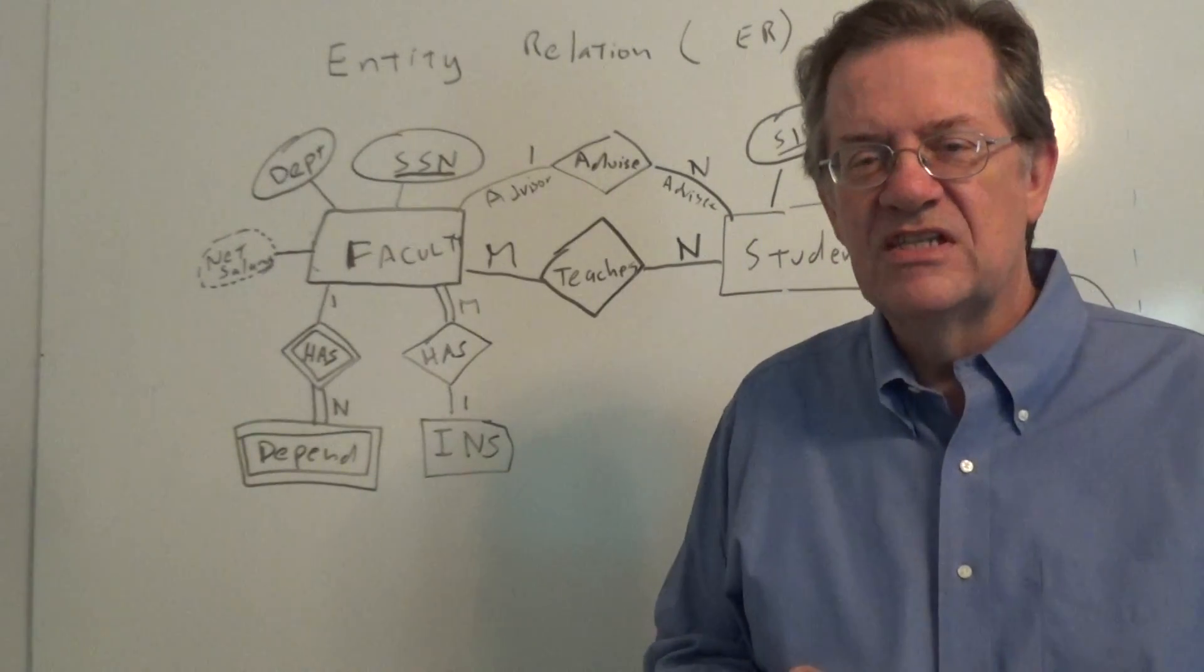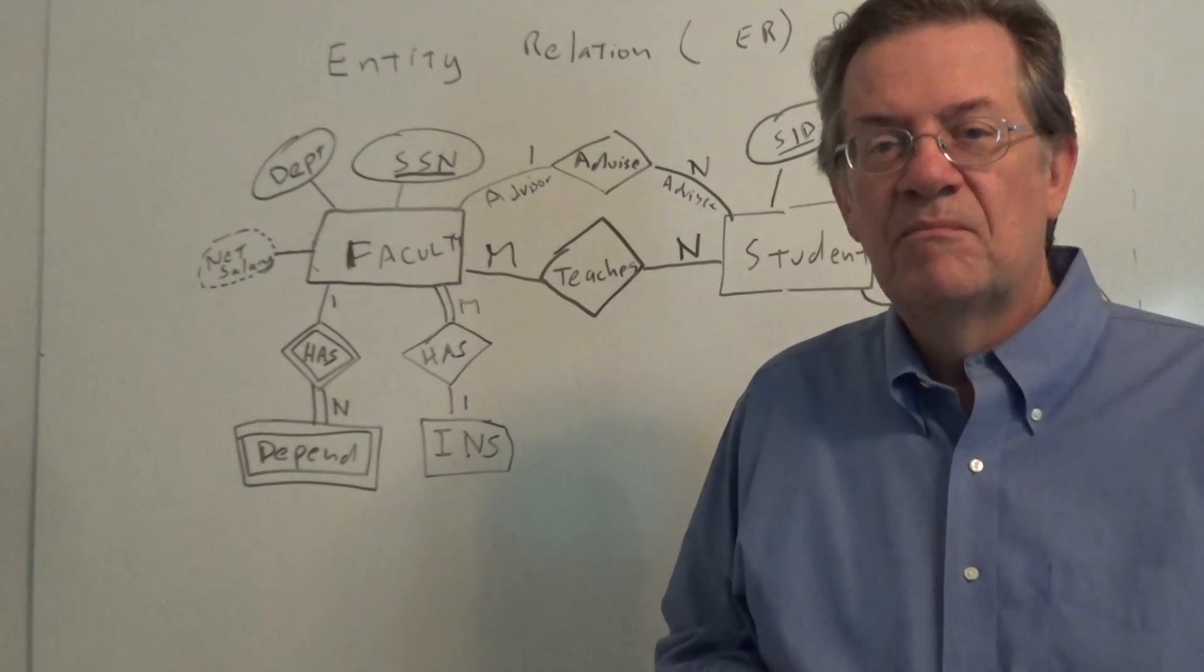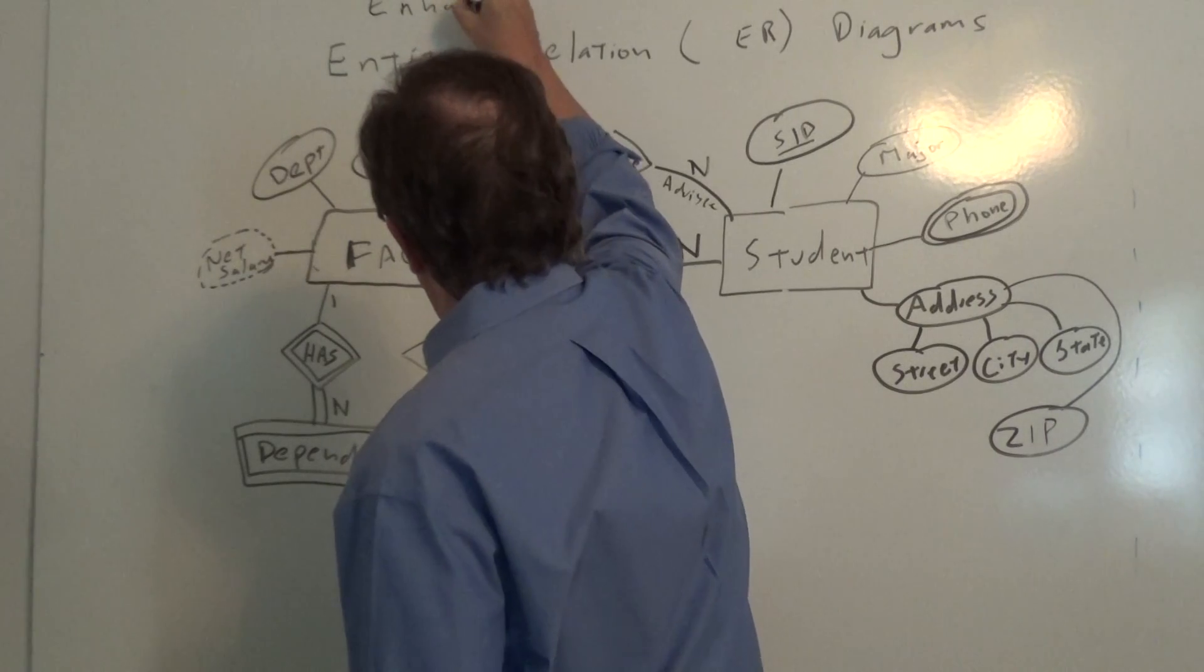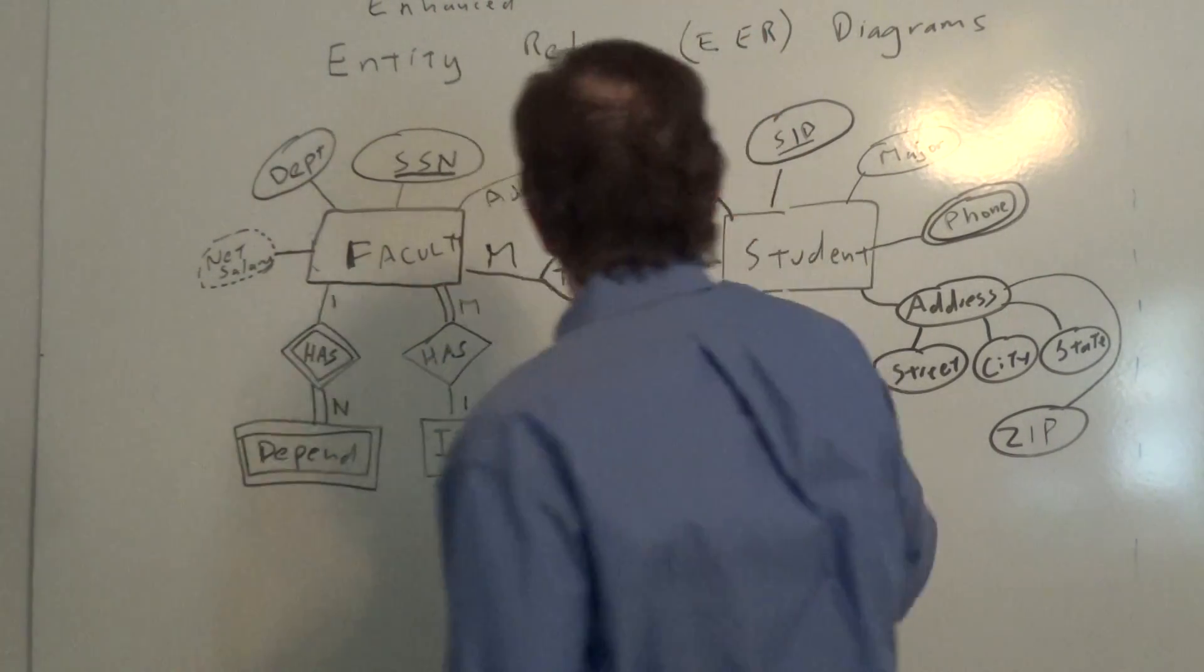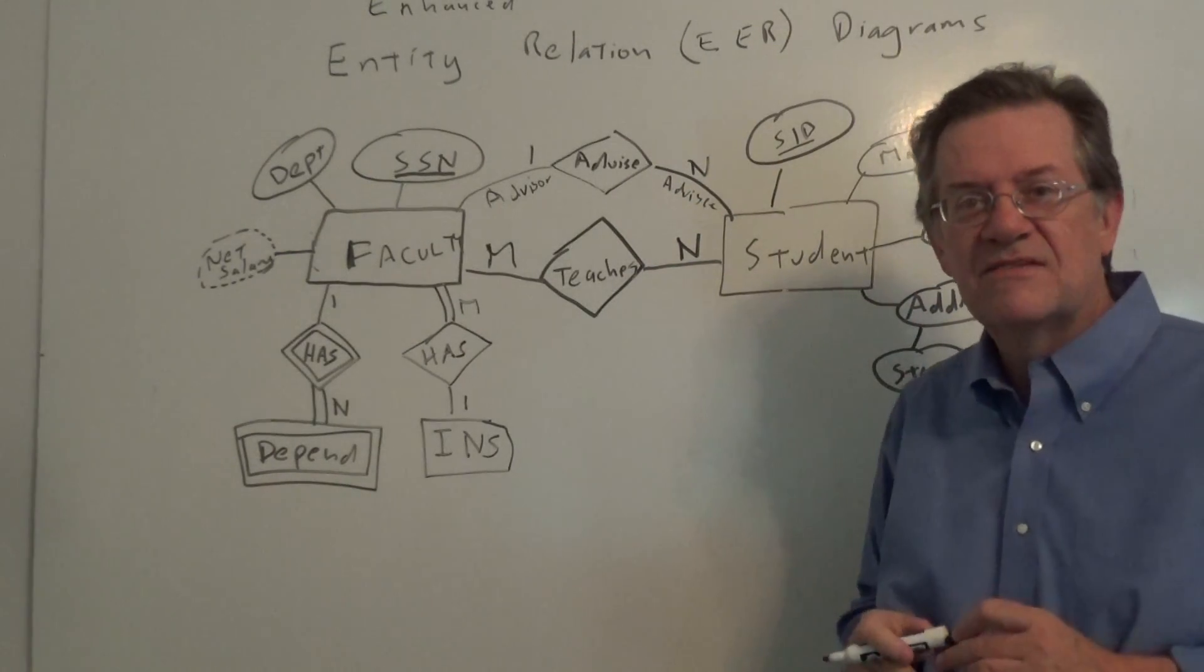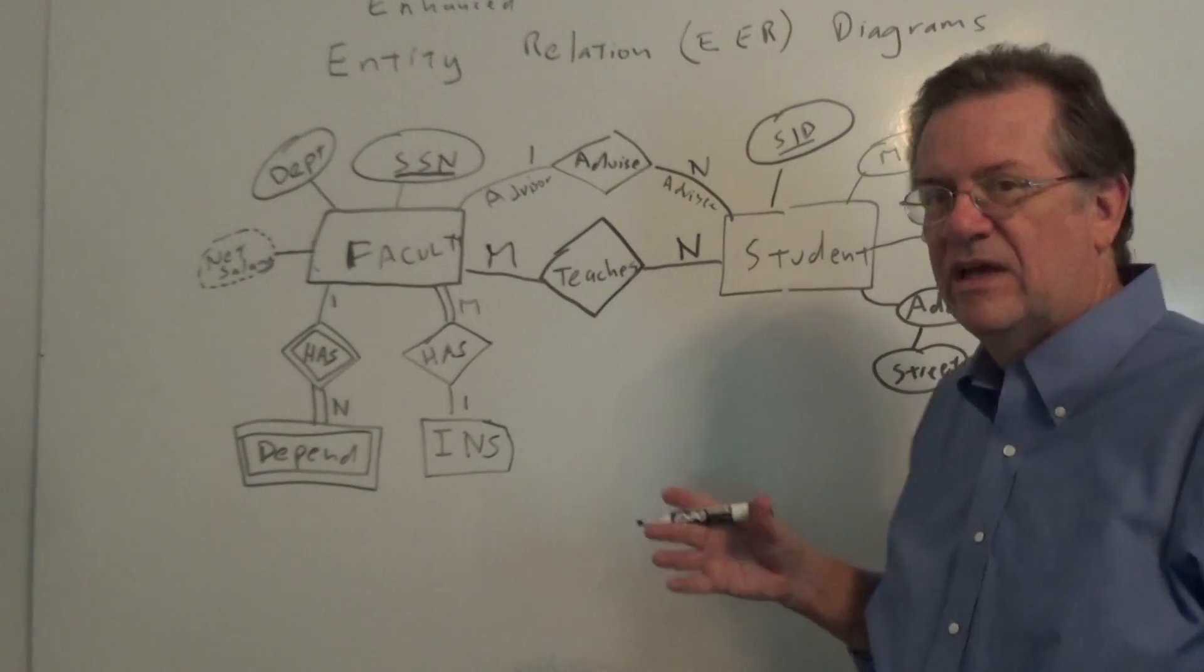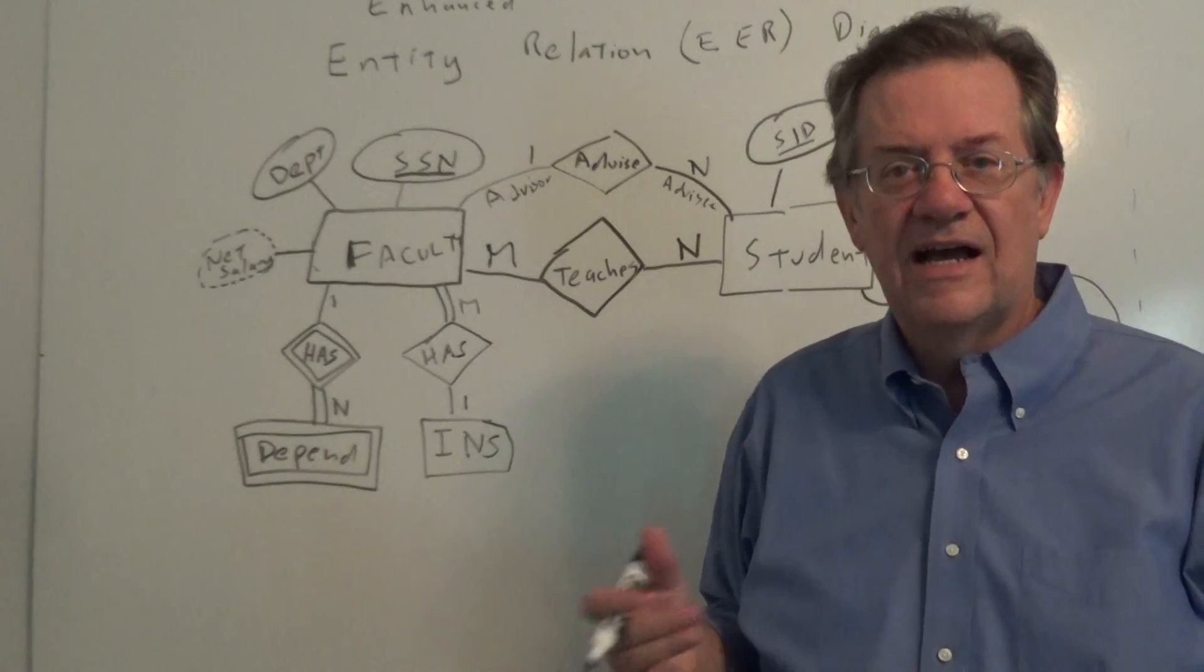Now one of the things that happens is that we have ER diagrams, which I just showed you the features for, but we also have something which is called enhanced ER diagrams. And typically that's written as EER diagrams. Well, what makes the difference between an enhanced, what makes ER diagrams enhanced? And what happens is that we introduce subclassing, generalization, into our ER diagrams.